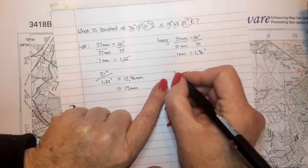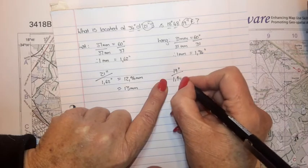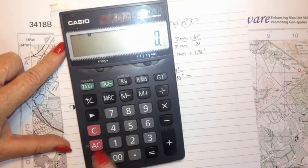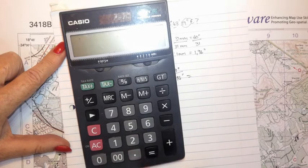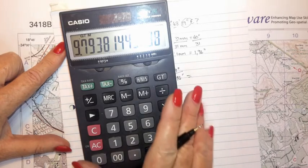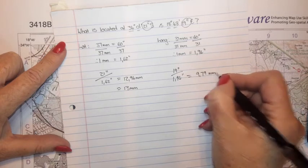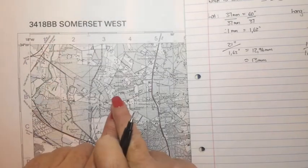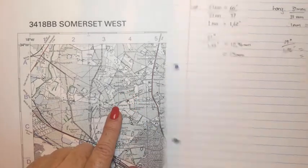We do the same for longitude using 19 seconds, and divide by 1.94 seconds. So 19 divided by 1.94 gives me 9.79 millimeters, which I round off to a whole number — 10 millimeters. This means that 10 millimeters from the longitude reference line is where that feature is located.